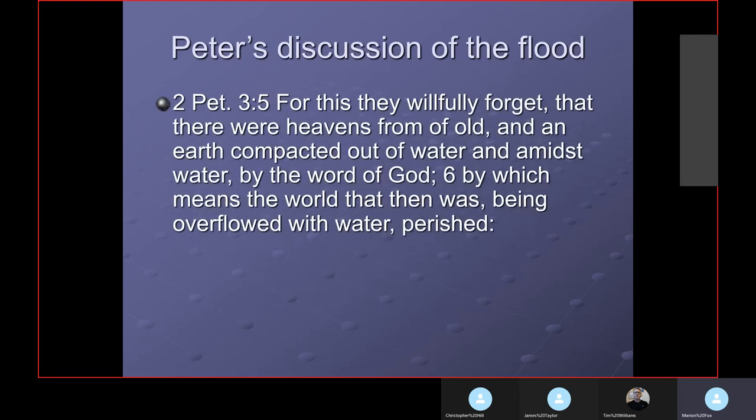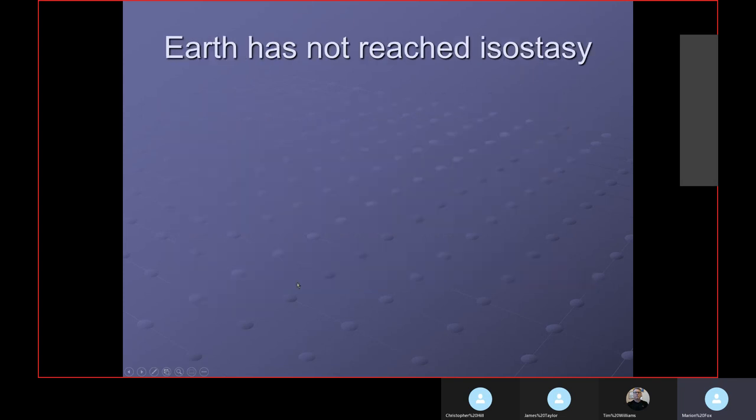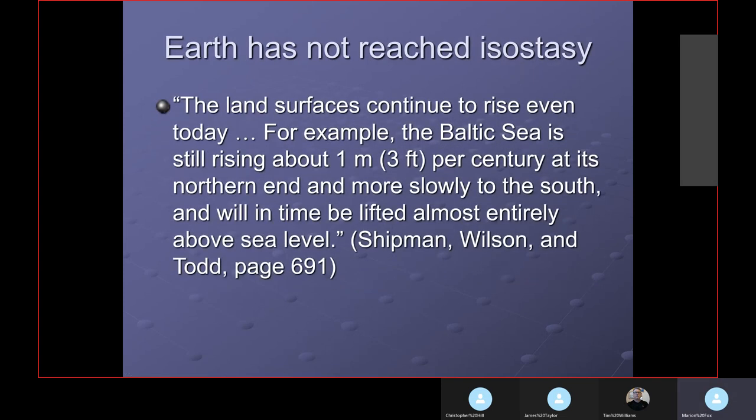2 Peter 3:5 says, for this they willfully forget, they don't want to know it, that there were heavens of old and earth compacted out of water and amidst water by the word of God, by which means the world that then was, being overflowed with water, perished. Peter states that the antediluvian world, cosmos, perished. That doesn't mean the land perished, it means the people, the world perished.